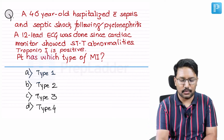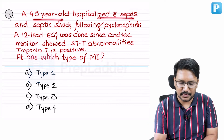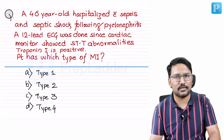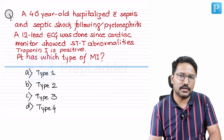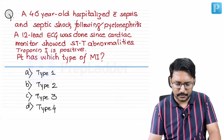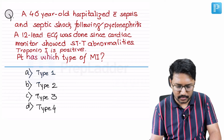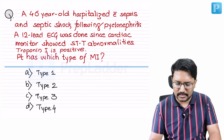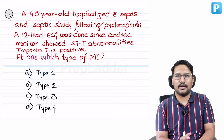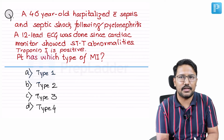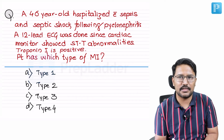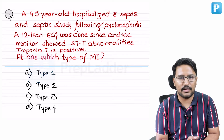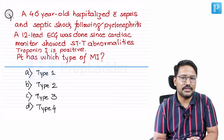A 46-year-old patient is hospitalized with sepsis and septic shock following pyelonephritis. These patients are at increased risk of coronary events during hospitalization and the immediate post-hospitalization period. The cardiac monitor showed changes, a 12-lead ECG was done, and troponin I is also positive. The question asks which type of myocardial infarction this is, with ST-T changes suggestive of MI and troponin confirming it.